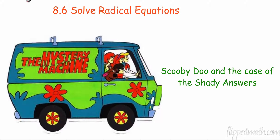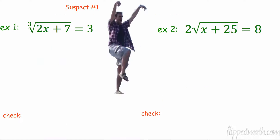Alright, so we're going to take a look here, see what we can do. We have suspect number one right now, and suspect number one is Mr. Kelly. Now, we have some equations here. These are radical equations. This is a third root, and this is a square root.